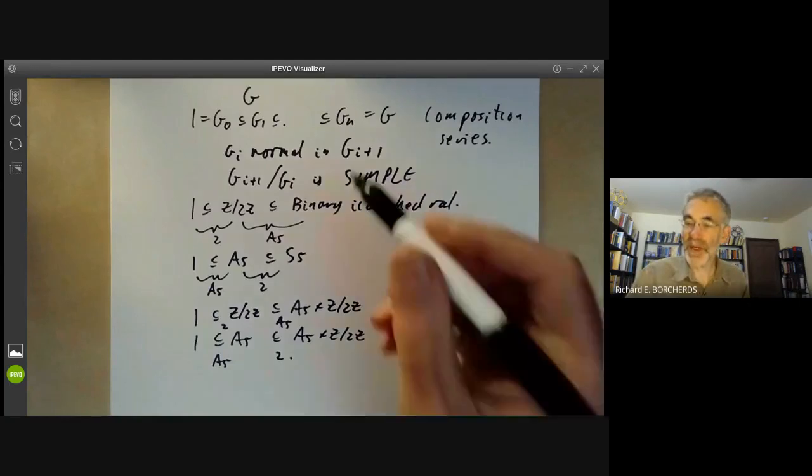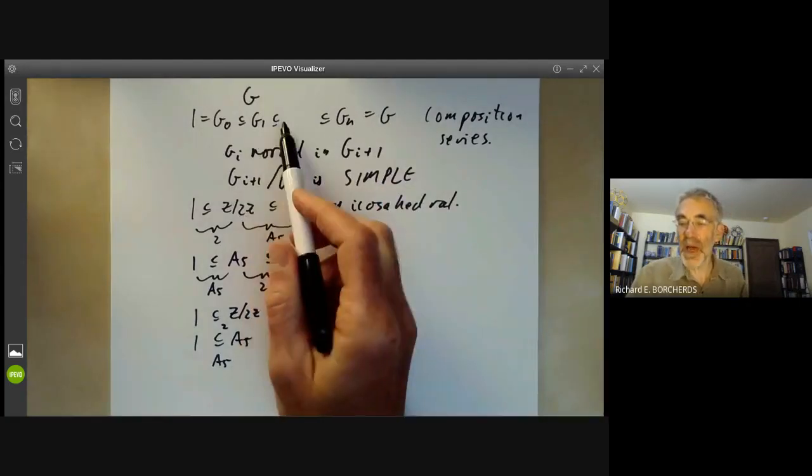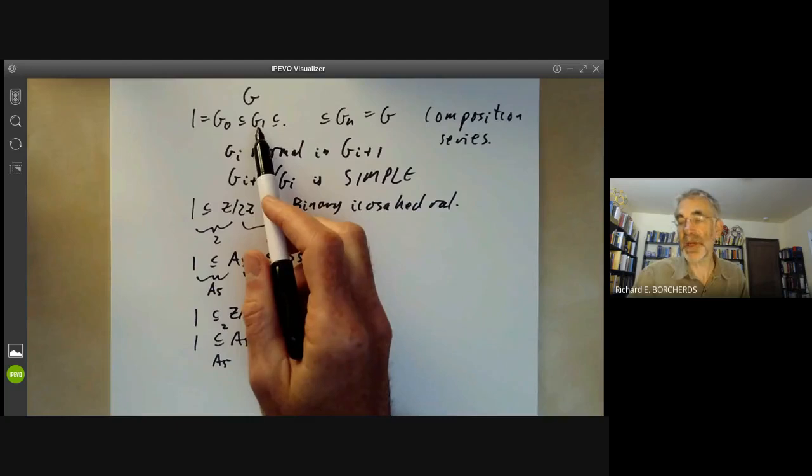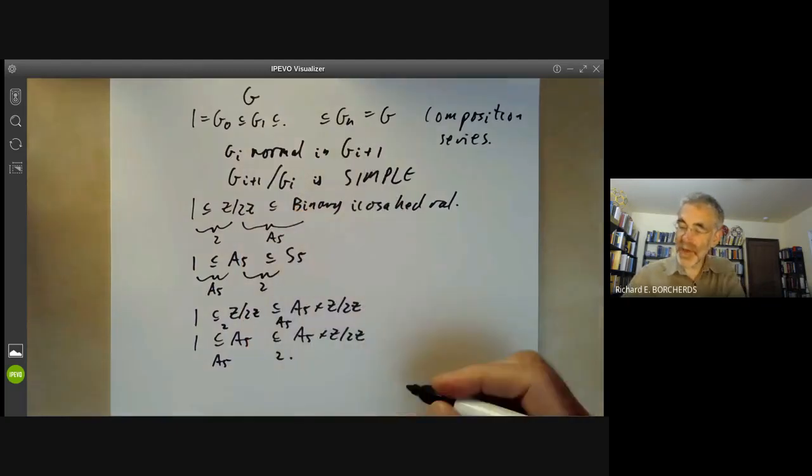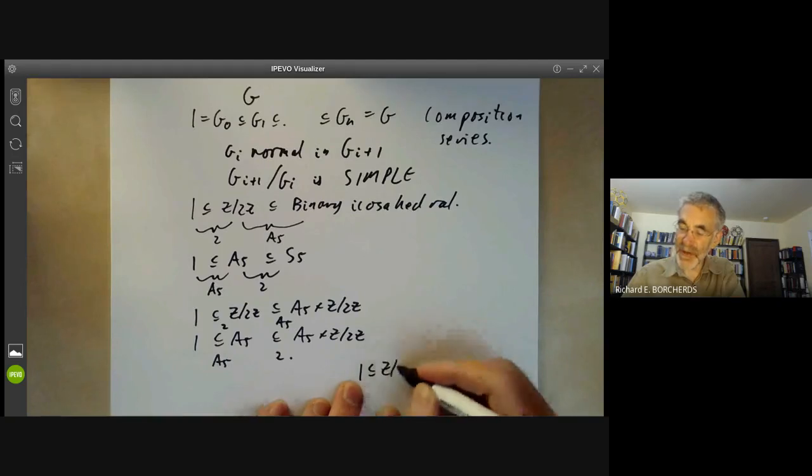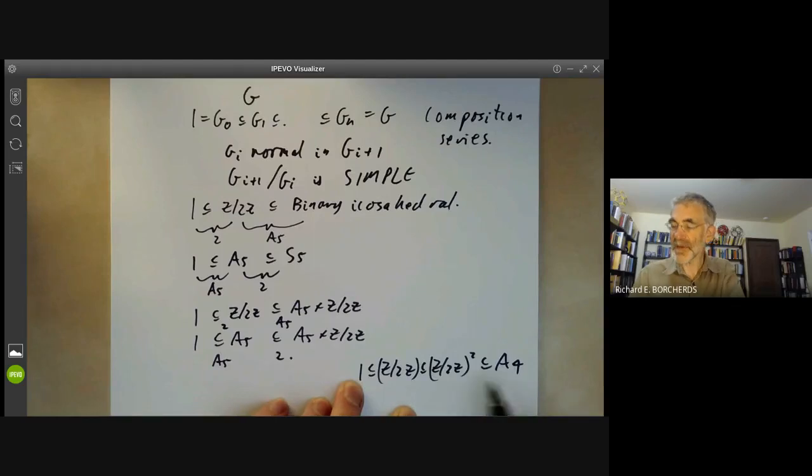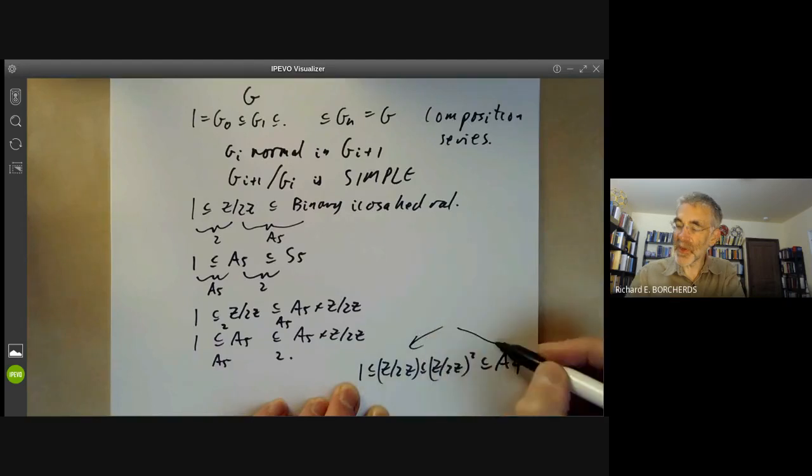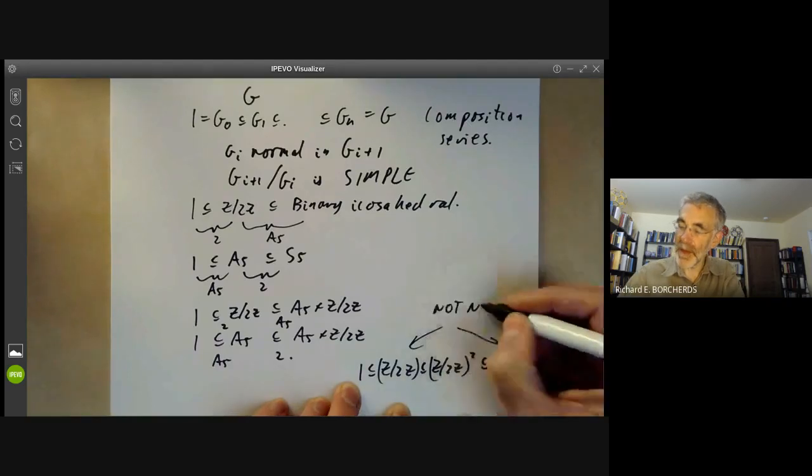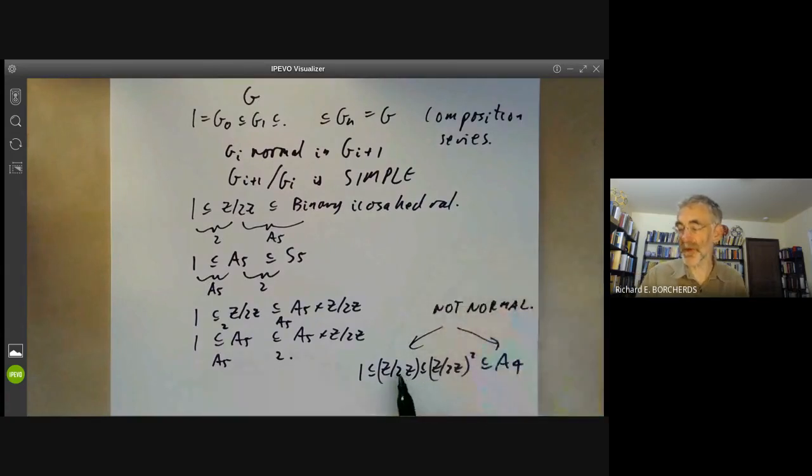I should point out that each GI is normal in the next one. This doesn't imply that G1, say, is normal in GN. For instance, if we look at one contained in Z over 2Z, contained in Z over 2Z squared, which is contained in the tetrahedral group A4, then each of these subgroups is normal in the next one. But Z modulo 2Z is not normal in A4. It's an example of something called a subnormal subgroup. If you've got a chain of subgroups such that each is normal in the next, then we say that the one at the bottom is subnormal in the top.